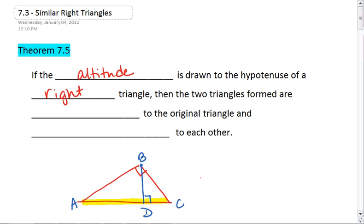Then the two triangles formed, so our left triangle and our right triangle, are going to be similar to the original triangle and similar to each other.